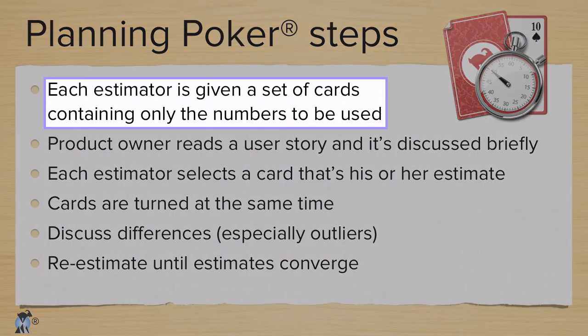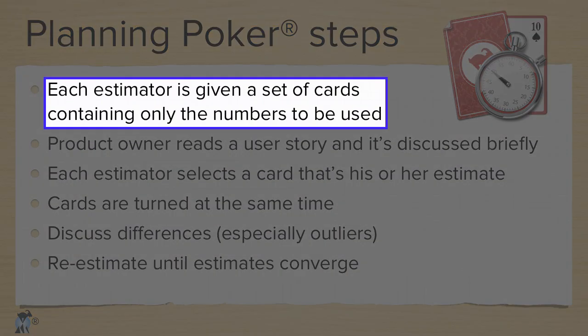In planning poker, each estimator — which should be everybody on the team — is holding a set of cards that contain the numbers the team has agreed to use as their estimates. Normally this will be the modified Fibonacci sequence, but that's really up to the team.